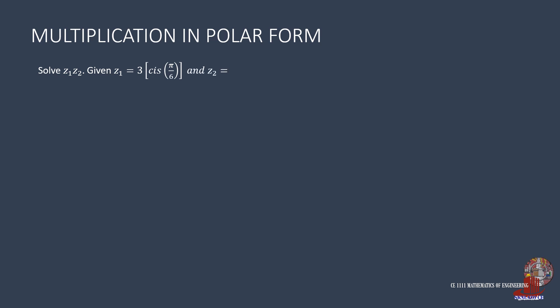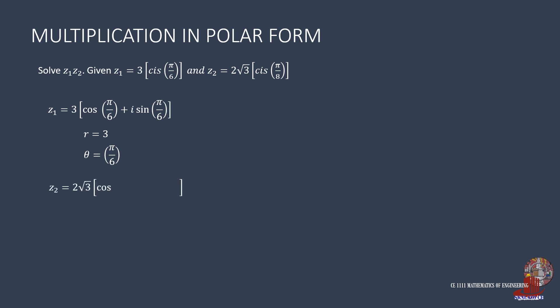The next example uses CIS format where z1 is equal to 3 times CIS of pi over 6, translated as 3 times cosine of pi over 6 plus i sine of pi over 6, where r is 3 and theta is pi over 6. z2 is equal to 2 root of 3 times cosine of pi over 8, so the modulus is 2 root of 3 and the argument is pi over 8. The resulting r is 3 times 2 root of 3, which is 6 root of 3.